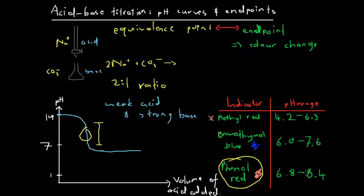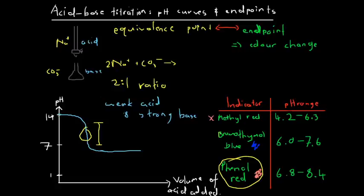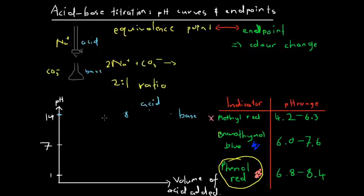Similarly, if we have a strong acid and a weak base, then the whole pH curve would be shifted down — the same way the weak acid curve was shifted up. So with a strong acid and a weak base, the curve starts with a lower pH and the equivalence point occurs in a lower pH region. In this situation, methyl red would probably be more appropriate because we're looking at a lower pH range at which the equivalence point occurs.